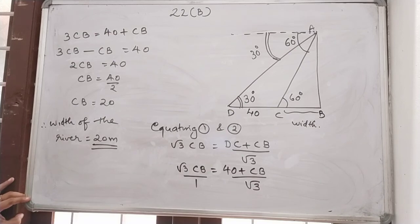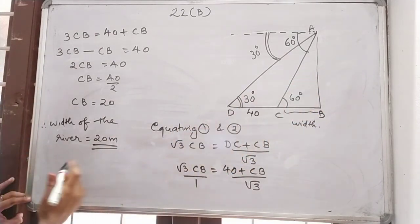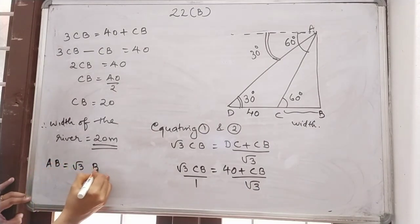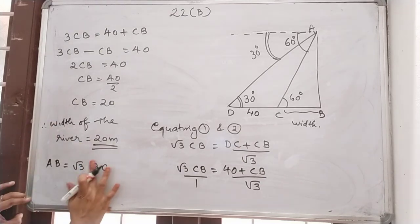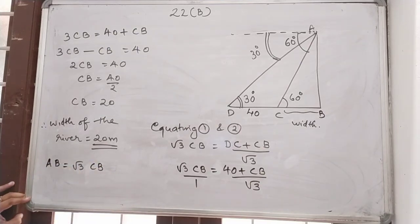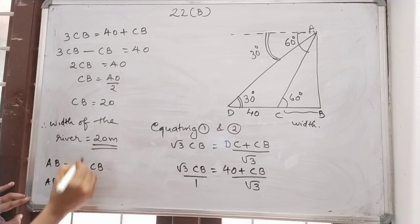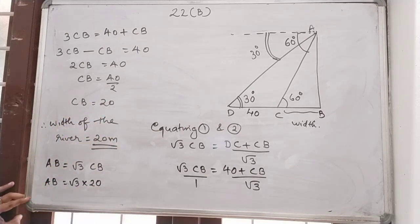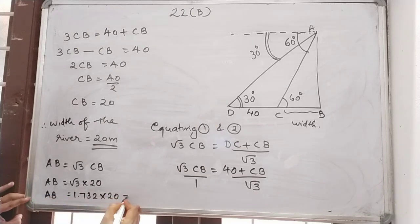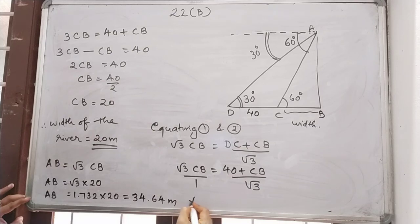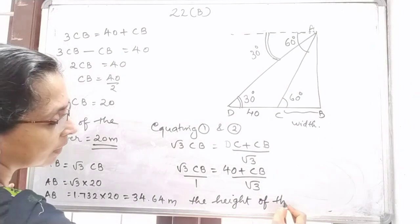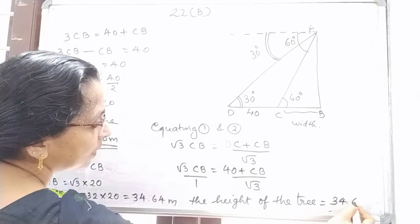From equation number 1 we have AB equals root 3 BC, which is root 3 CB. AB is the height of the tree. Substituting CB equals 20: AB equals root 3 into 20, that is 20 root 3. Substituting root 3 equals 1.732: AB equals 20 into 1.732, which gives 34.64 meters. Therefore the height of the tree is 34.64 meters.